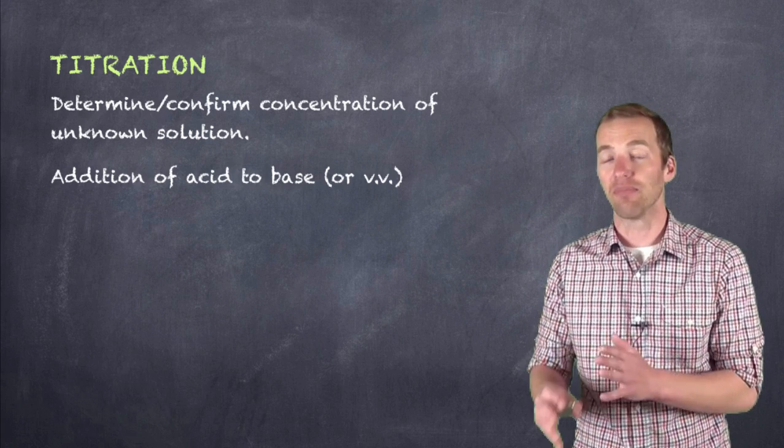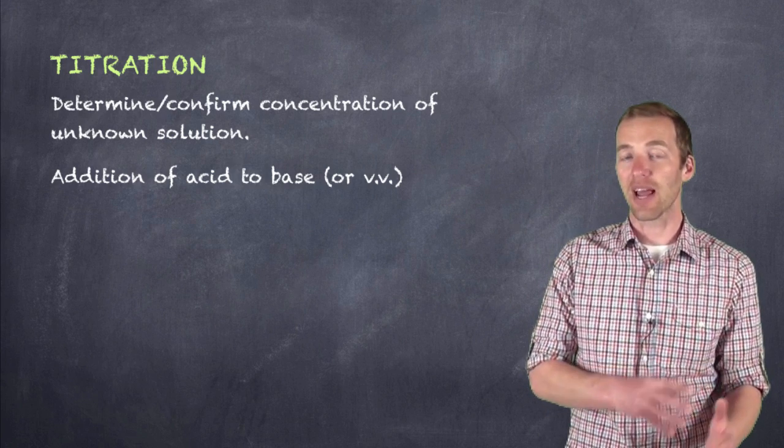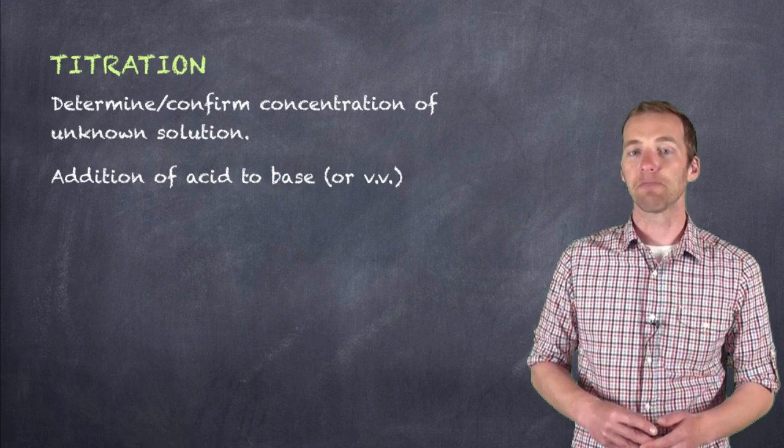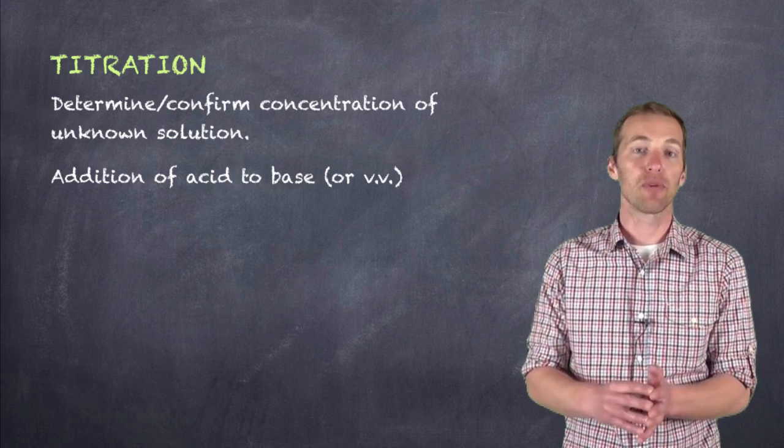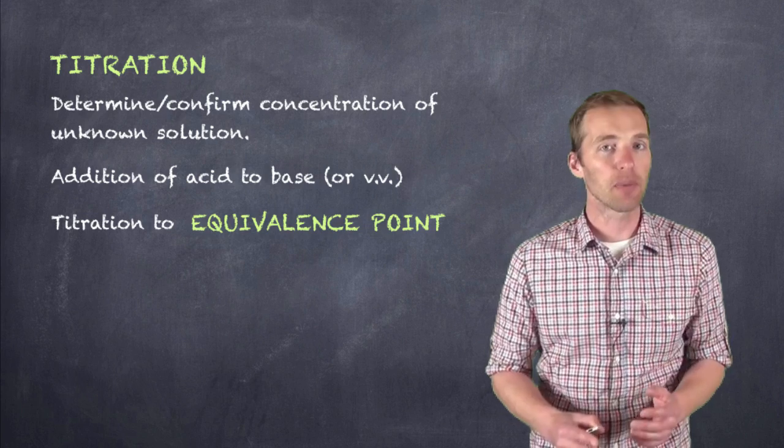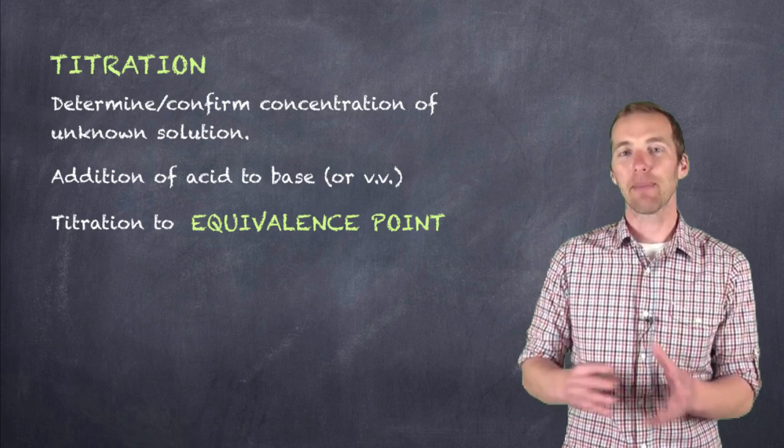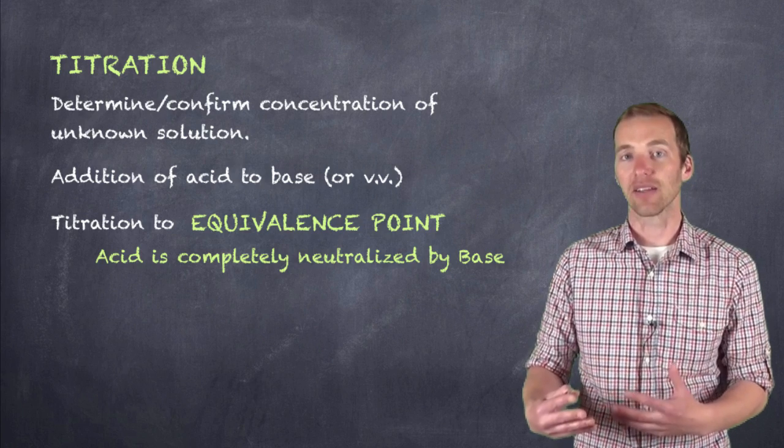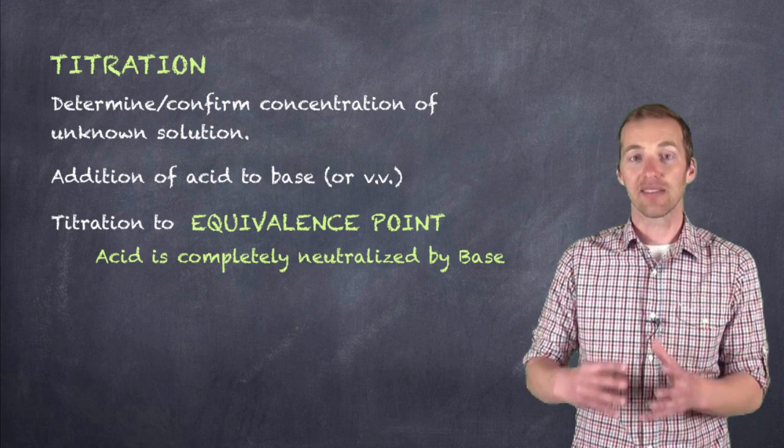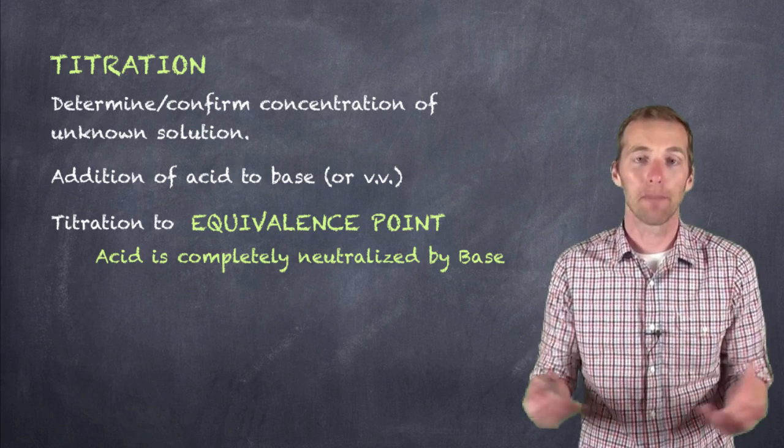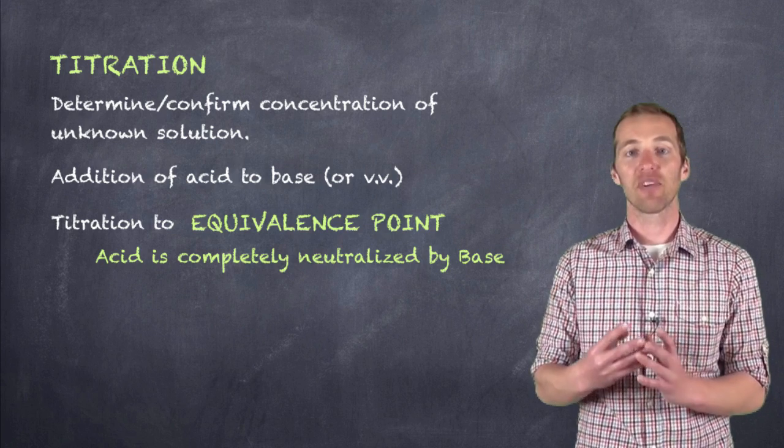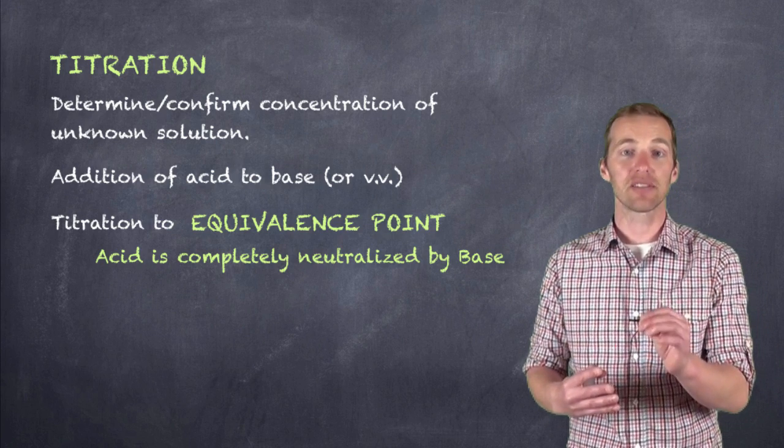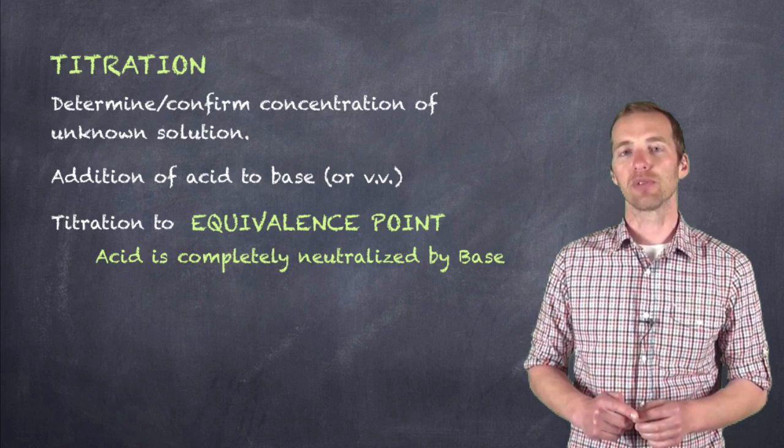If we can establish the number of moles of base that it took to neutralize that acid, we can work through what the concentration of that unknown is. And we titrate to something that we refer to as equivalence point. Remember we talked about equivalence already, in that it's the amount of acid or base that it takes to neutralize a base or an acid. And so what it does is it tells us when something is completely neutralized and the number of moles of acid and the number of moles of base have been the same, and so it gives us again that stoichiometric relationship that we can use.